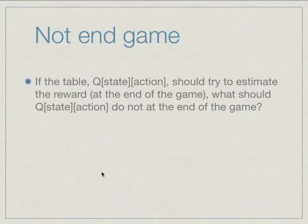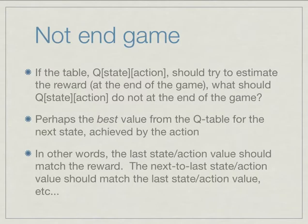So if the table should estimate the reward at the end of the game, what should this table do when it's not at the end of the game? Well, really what Q-learning does is it says perhaps the best value from the Q table for the next state, that's what we should estimate. So in other words, the last state action value should match the reward. The next to last state action value should match the last state action value and so on, kind of percolating back.